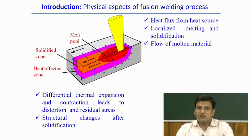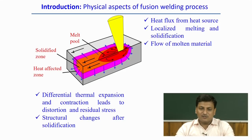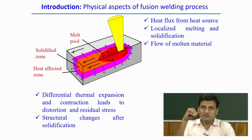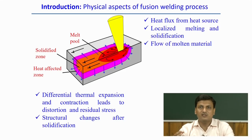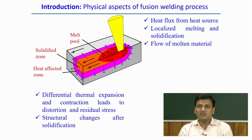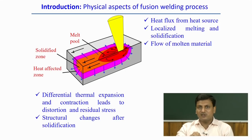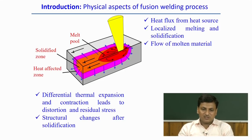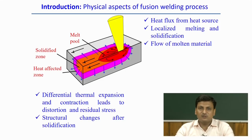Before doing that, let us understand the physical aspects involved in the welding process. This example shows that a heat source — from laser, electric arc, electron beam, or resistance heating — causes localized melting in a certain zone. The surrounding area is the heat-affected zone, which develops temperature above the base material. As the heat source advances, the subsequent part solidifies. We can see the melt pool, solidified zone, and heat-affected zone from the figure.